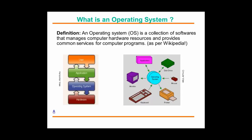As per Wikipedia, an operating system — in short, also called OS — is a collection of software. That means an OS is software that manages computer hardware resources and provides common services for computer programs.